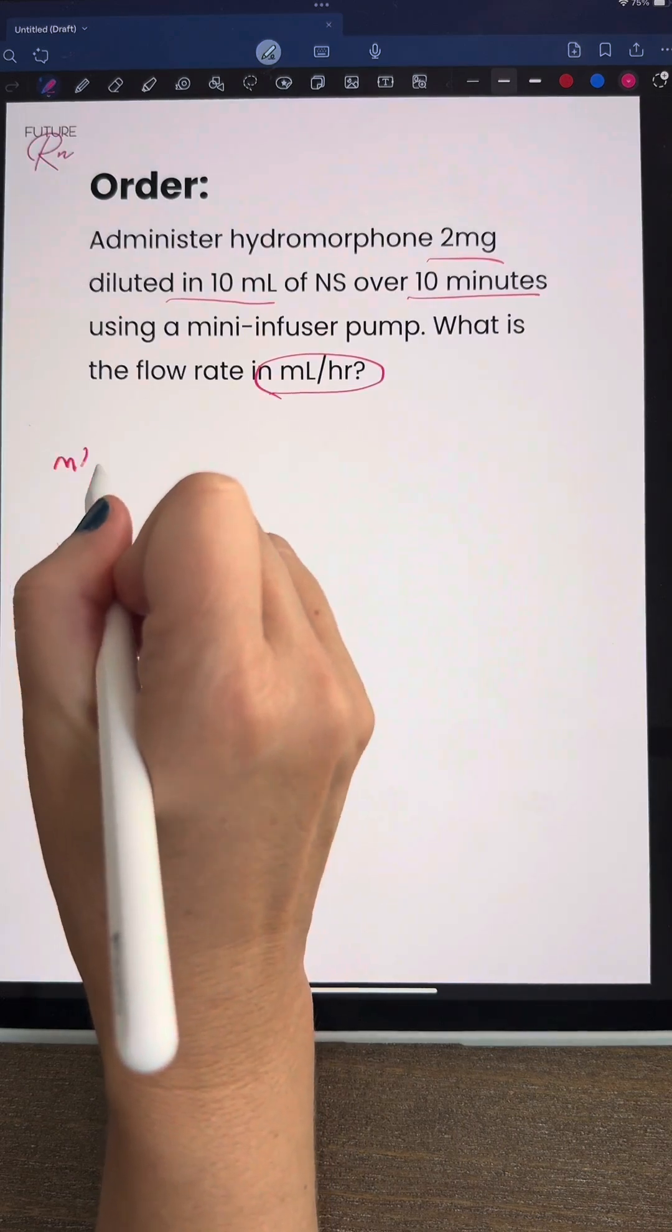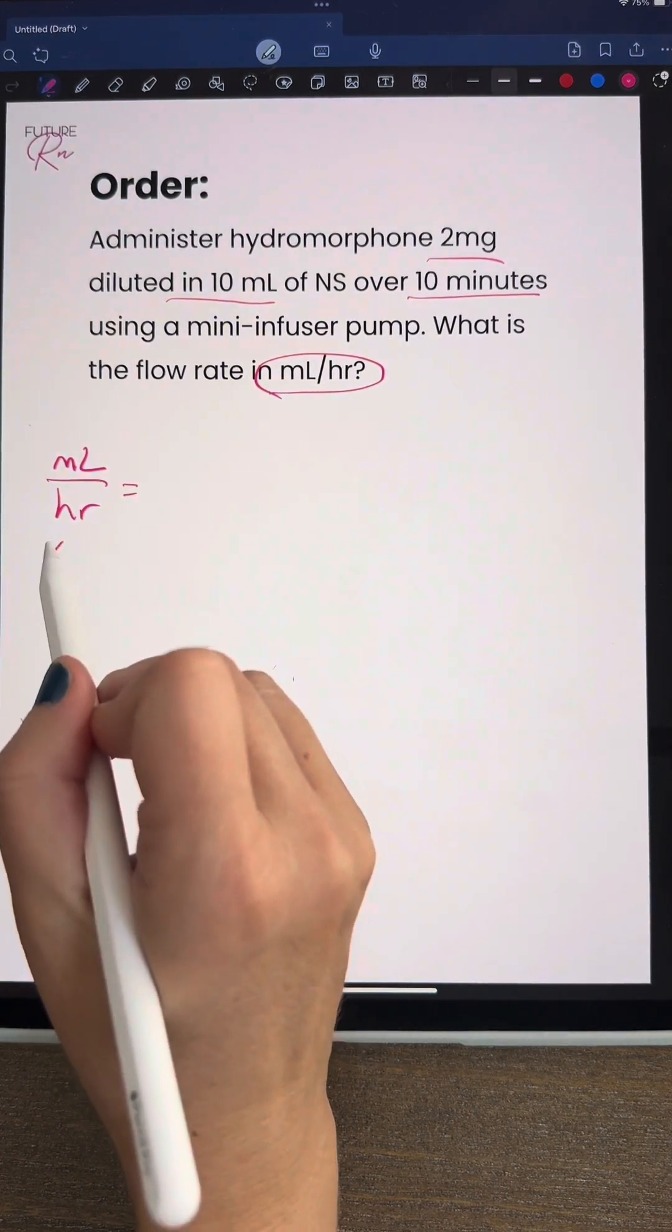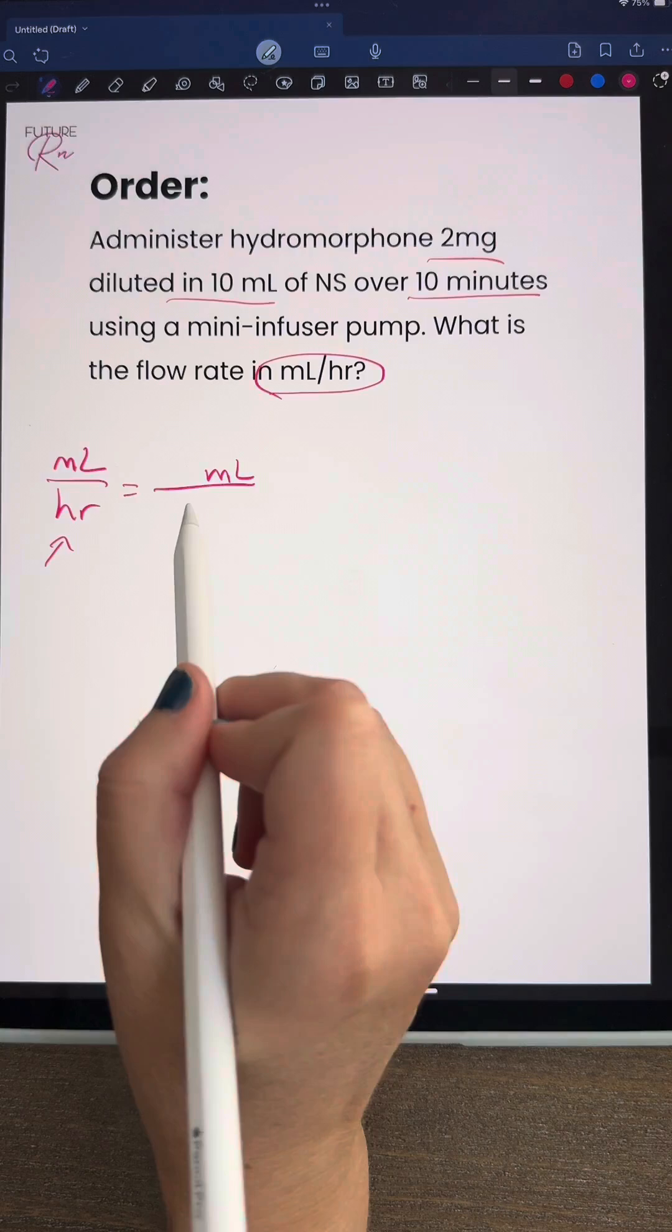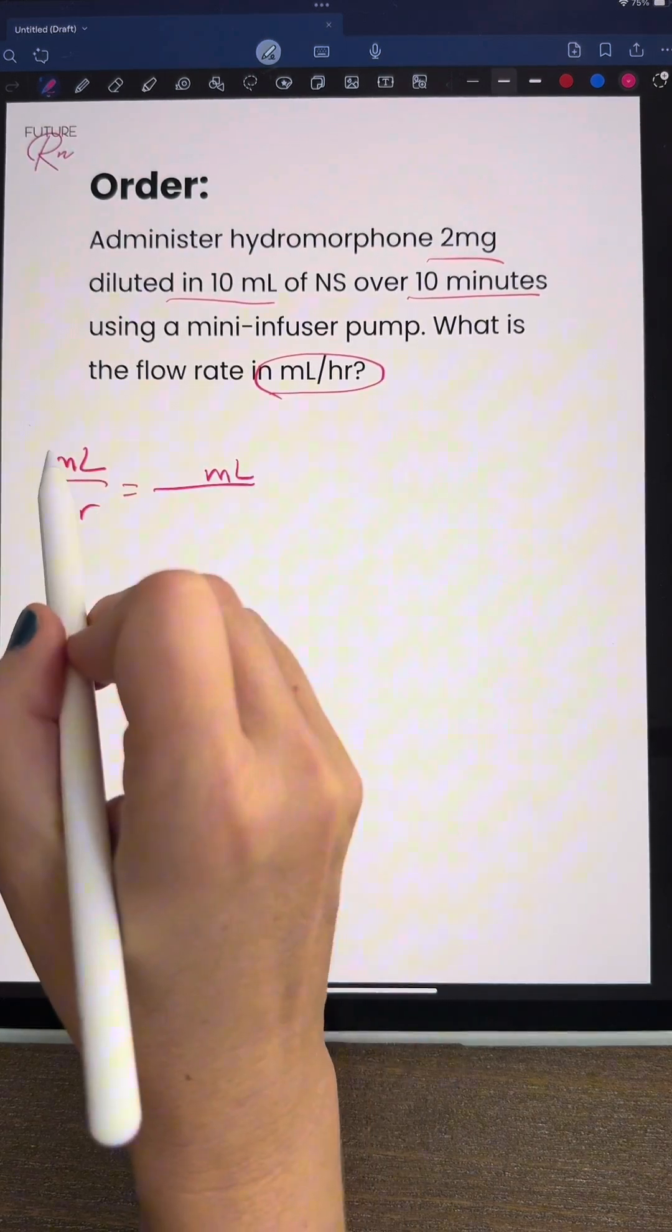We want to do milliliters per hour because that's the unit we're going to get to. That's going to be at the left of the equal sign. The first thing we want to put in as our numerator is something with milliliters to match that.